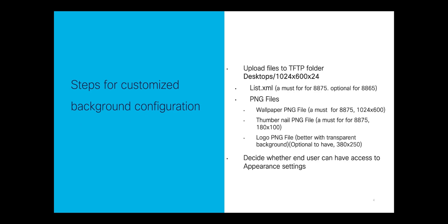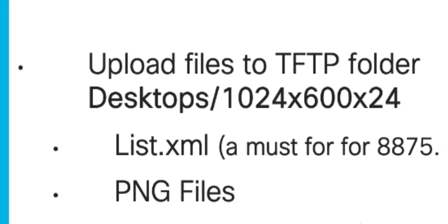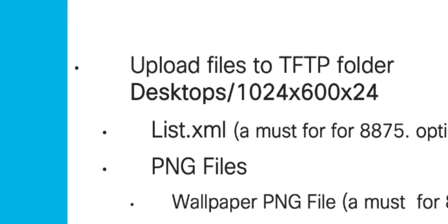One of the main differences between the 8875 and the other 8800 series is that you must use a list.xml file. This is a hard requirement. You must also upload your PNG files to this directory. That's also a requirement.